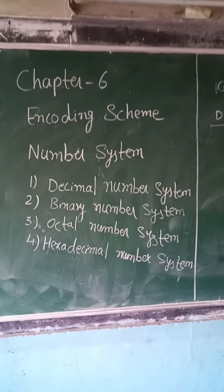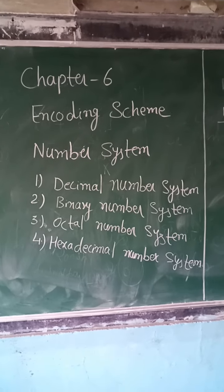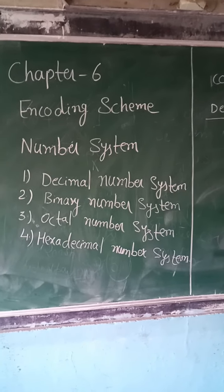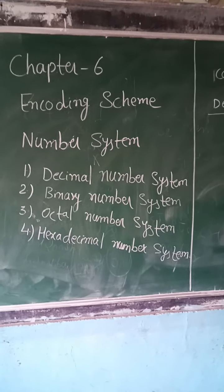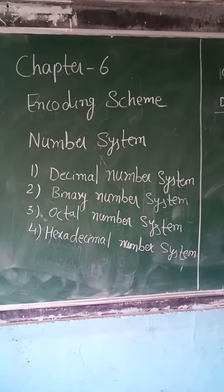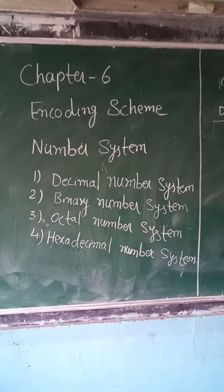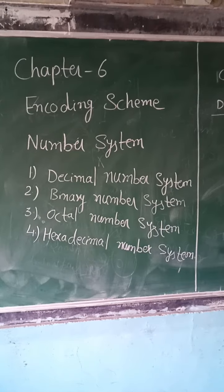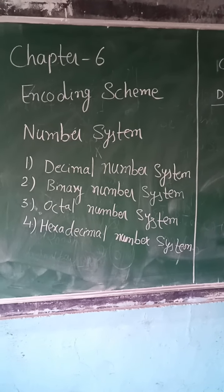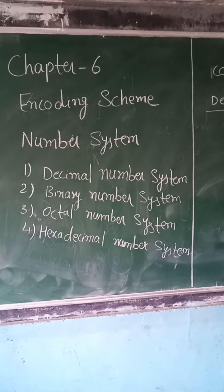Binary number system, as you know, bi means 2, so this number system contains only two digits, either 0 or 1. And the language that supports these two digits, that is bits, binary digits, is known as binary language.